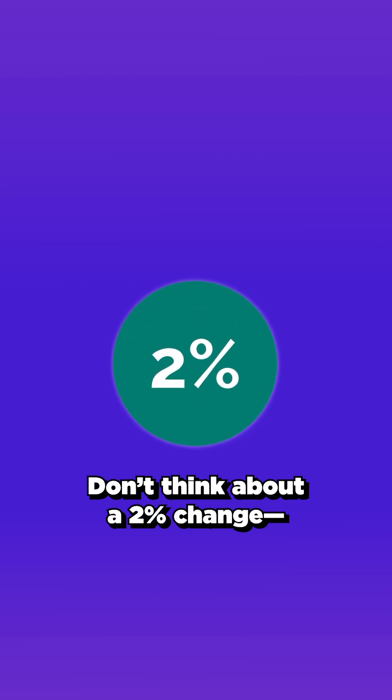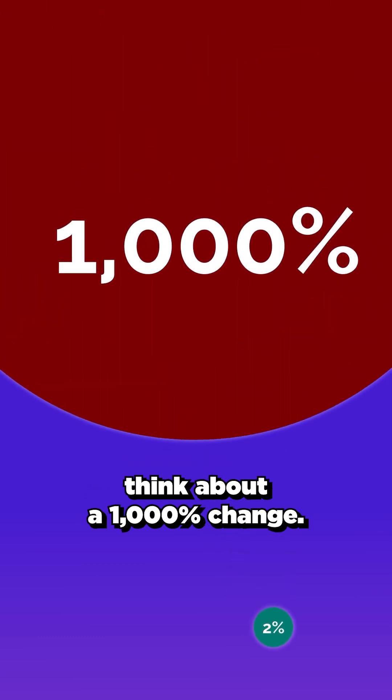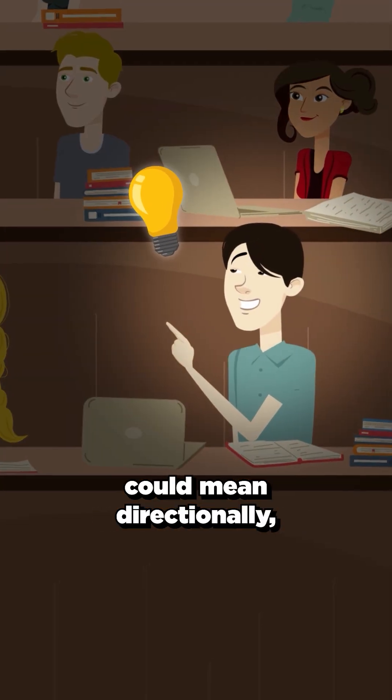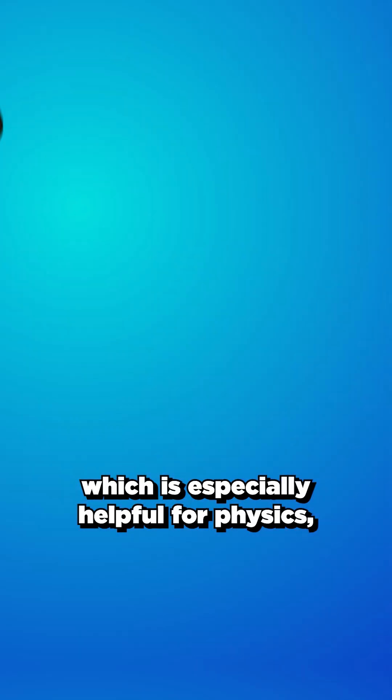Don't think about a 2% change, think about a 1,000% change. This provides much more clarity as to what smaller changes could mean directionally, which is especially helpful for physics, chemistry, and math tests.